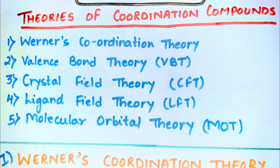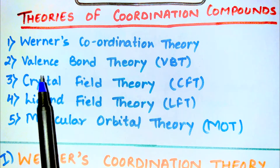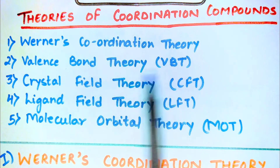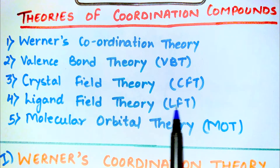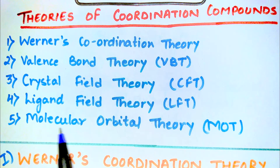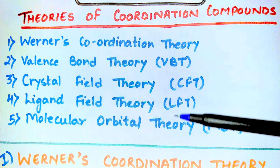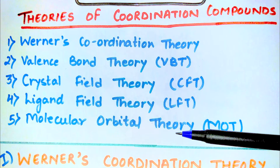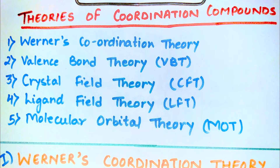Hello everyone. Today we are going to do theories of coordination compounds. There are five theories of coordination compounds namely Werner's Coordination Theory, Valence Bond Theory (VBT), Crystal Field Theory (CFT), Ligand Field Theory (LFT), and Molecular Orbital Theory (MOT). We are going to do all these five theories in detail, but in this video we will be doing Werner's Coordination Theory only.